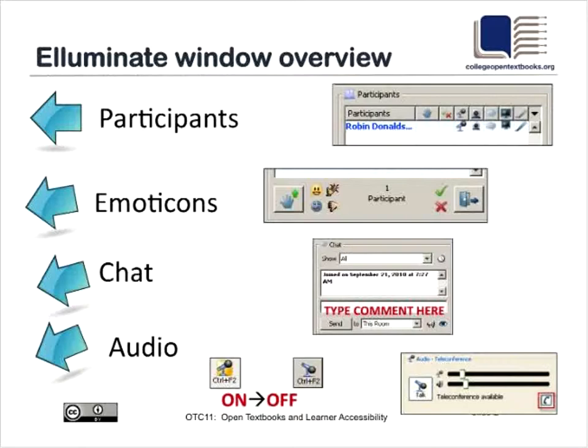Directly underneath the chat window are your audio controls. If you are using the phone or a headset, you should be looking at these audio controls. If you're on the phone, take your audio controls all the way to the left to turn those off. If you're going to use a mic, click on and off at the bottom. When the mic is in the up position, that allows you to speak. When the mic is down, that turns it off — otherwise we may get an echo from your machine.